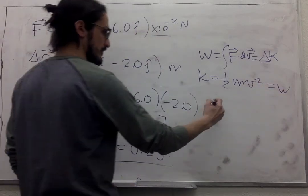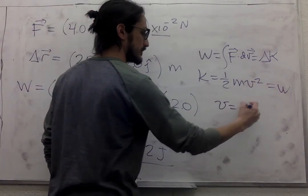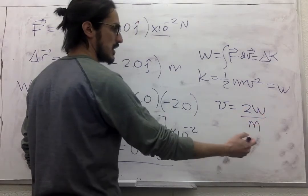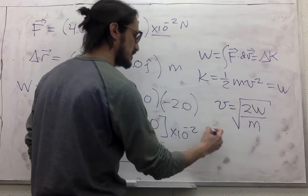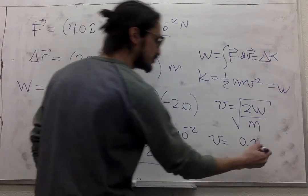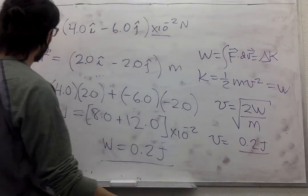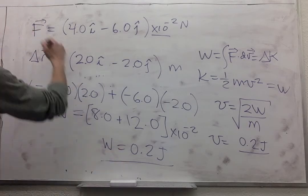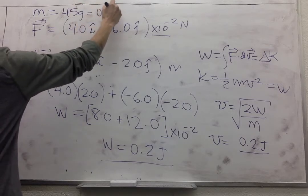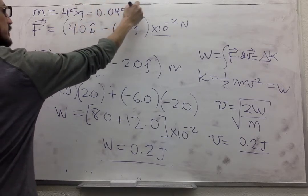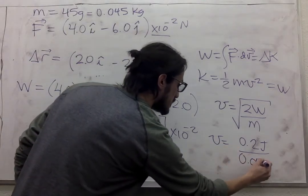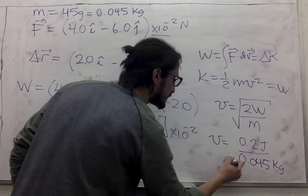So if we want the velocity, that's twice the work divided by the mass, square root of that. So that's 0.2 joules divided by the mass, which was 45 grams, 0.045 kilograms. Pretty heavy bug. Just root of that.